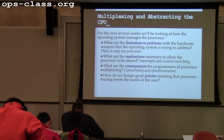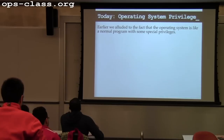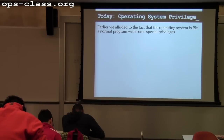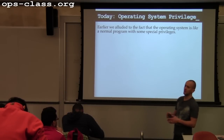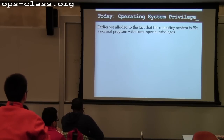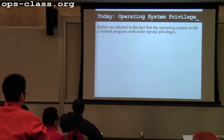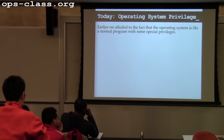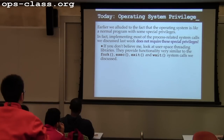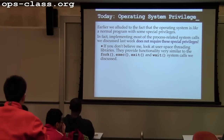This is the overall game plan for the next few weeks. Our description of the operating system so far has been a bit like talking about the C library, because fork, exec, wait, and exit are C library calls that happen to use the operating system. Today we need to start being more specific about how the OS is different from a normal program or normal library.